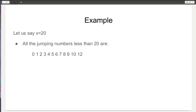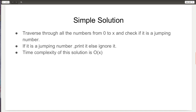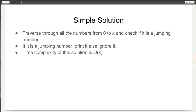Now that we understand the problem statement, let's look at a simple brute force solution. The solution is to traverse through all numbers from 0 to x and check if each specific number is a jumping number or not. If it is, print it; otherwise ignore it. This is a simple brute force solution with a time complexity of O(x), where x is the given number.